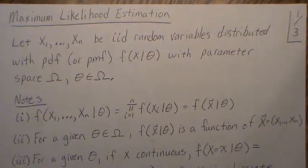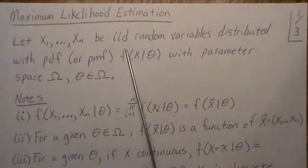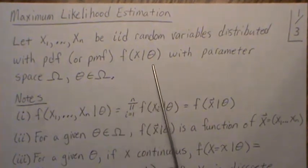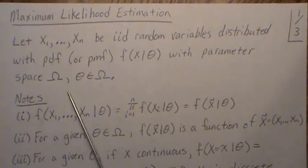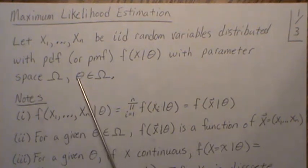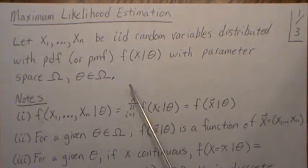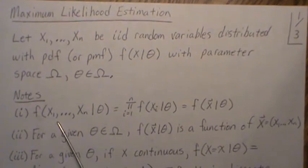Hello, this is the next video in a playlist I'm calling 'Parameter Estimation,' and in this video we're going to look at maximum likelihood estimation. Let X₁ through Xₙ be IID random variables distributed with some PDF or PMF F, with parameter space theta that lives in omega. We're going to go through several notes about maximum likelihood estimation.